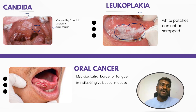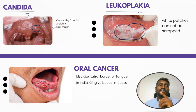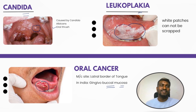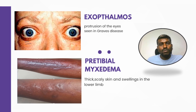The third image is oral cancer, and this is going to be commonly located at the lateral border of the tongue. In India, it is commonly located at the gingivobuccal mucosa — very important to remember.